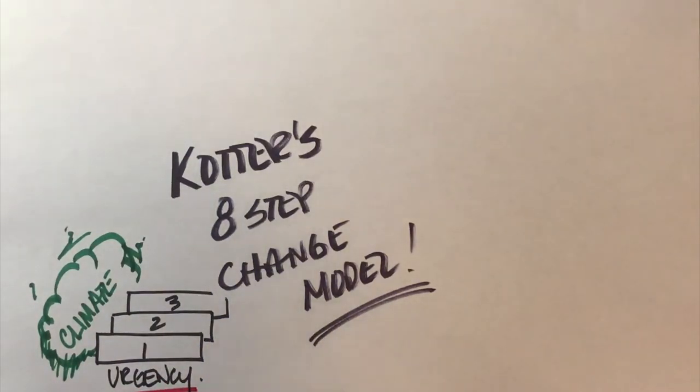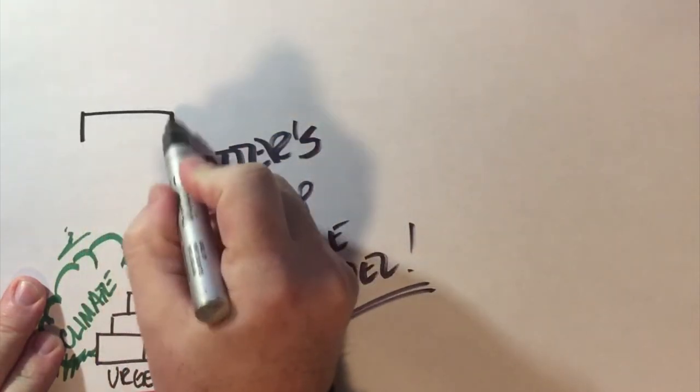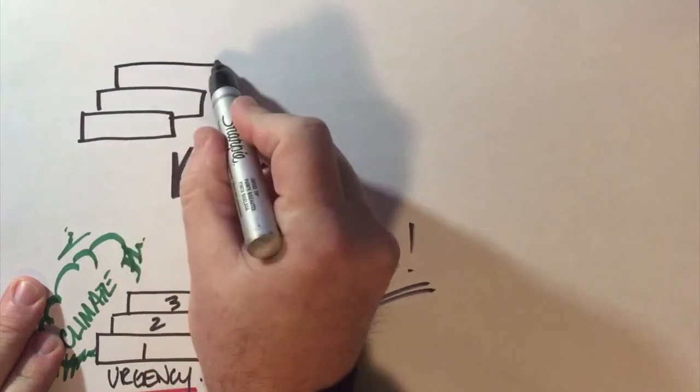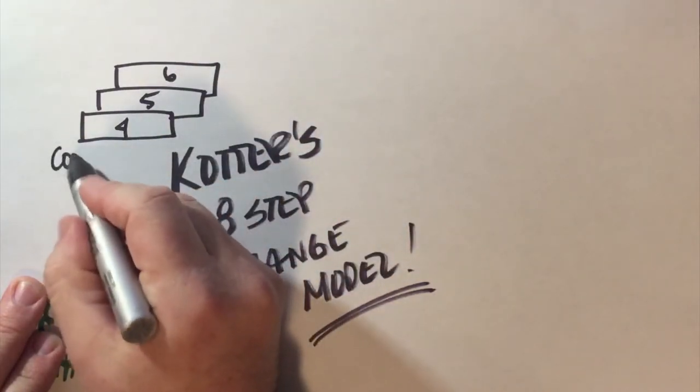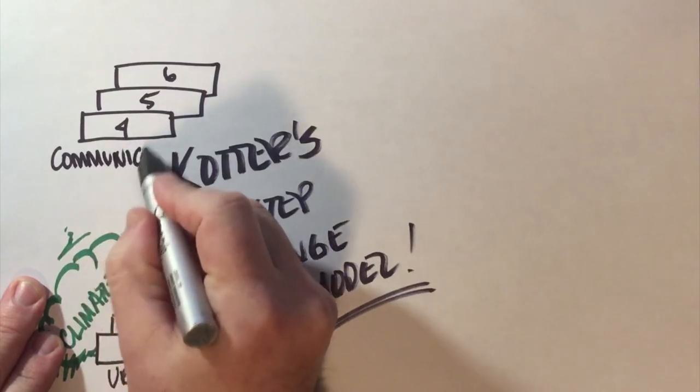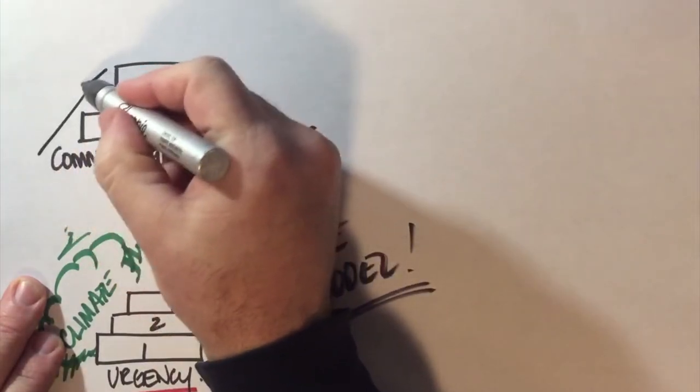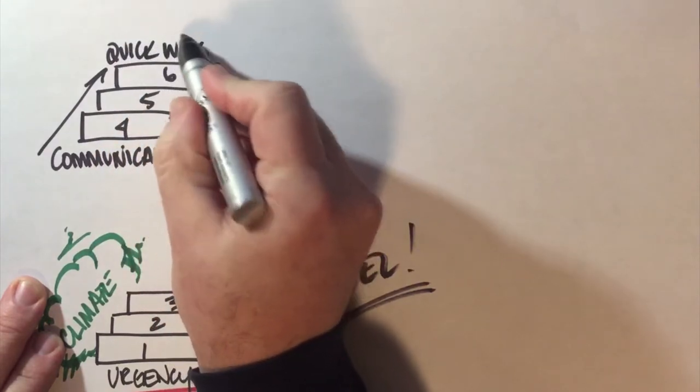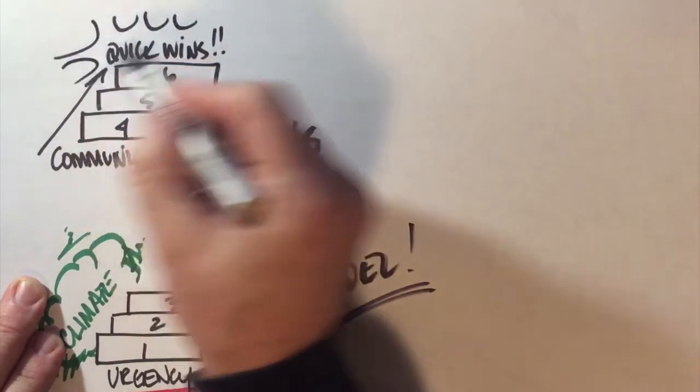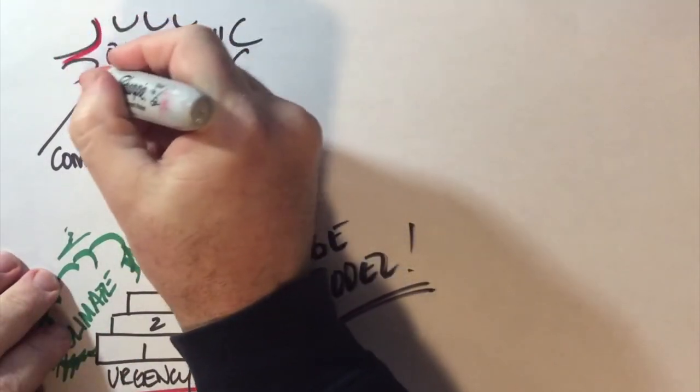The next three steps are really the bulk of the work when it comes to the eight-step change model. I'm going to draw out those three steps over here. Those three steps really have everything to do with communication. Steps four, five, and six tend to focus a lot on the communication process of any kind of change initiative. Some would argue that communication would go first, some would argue that it goes through the whole thing, but in John's model he puts it at number four. Number six is what he calls quick wins.